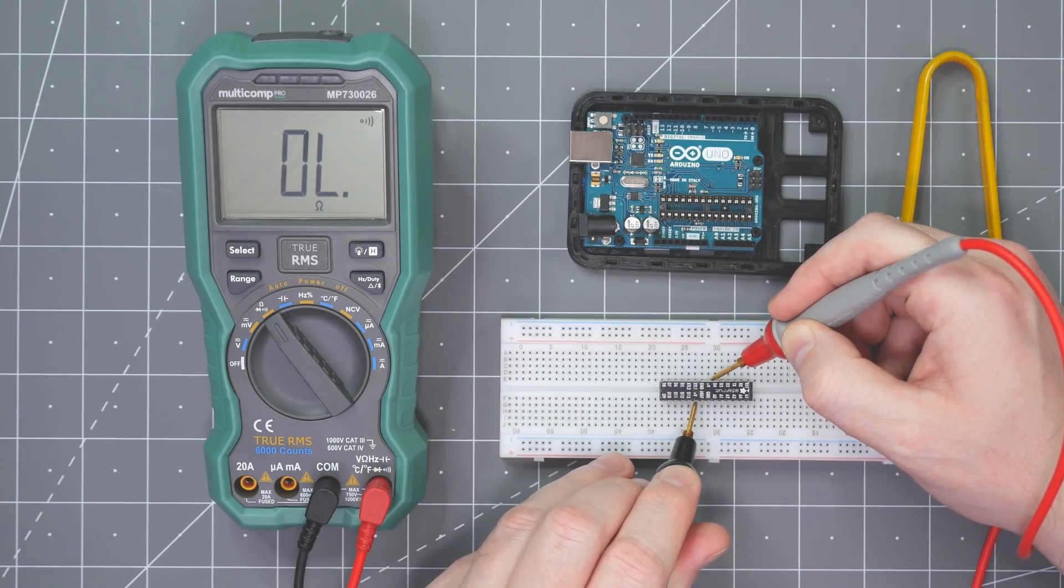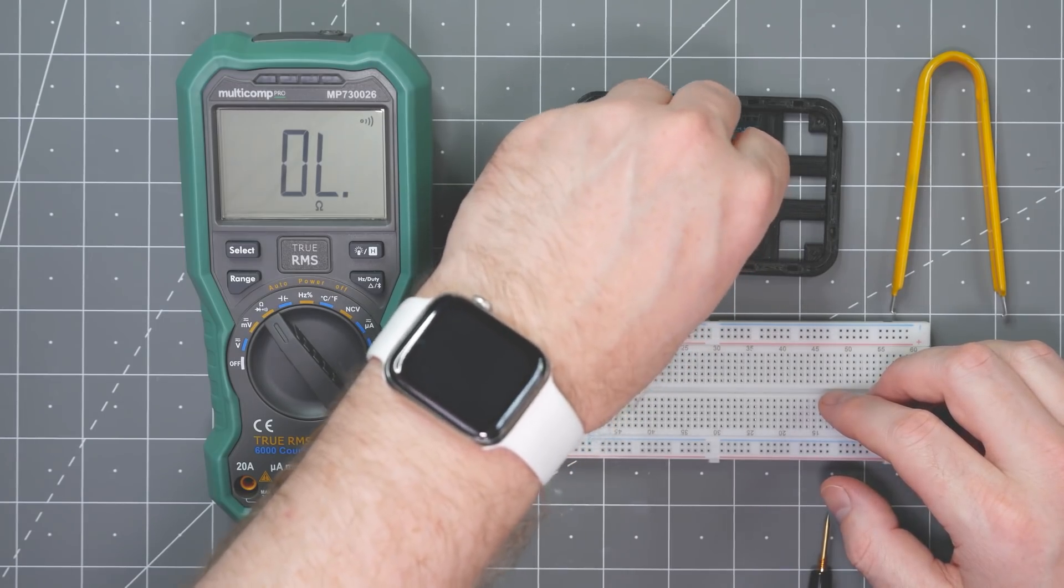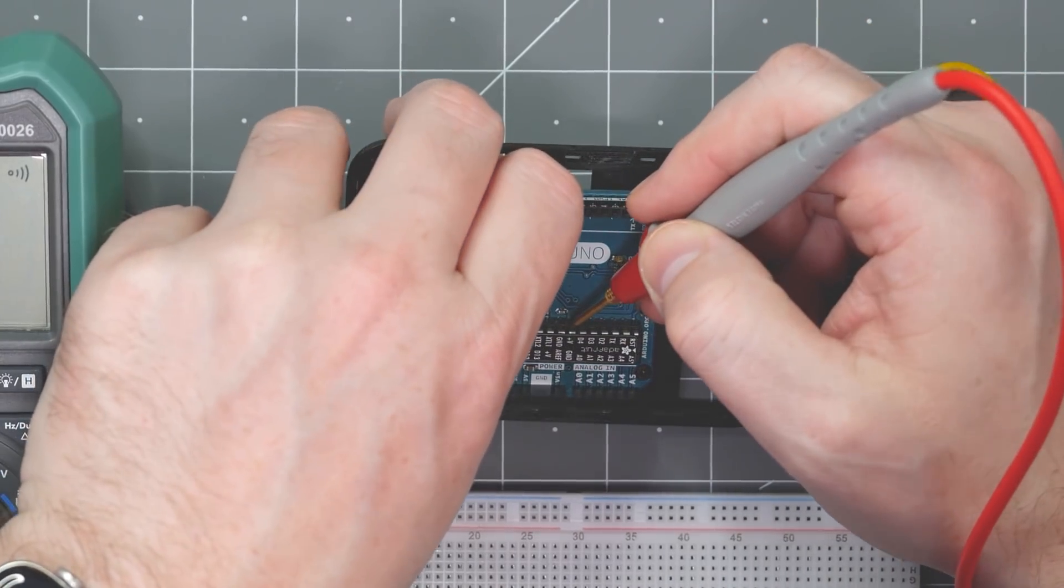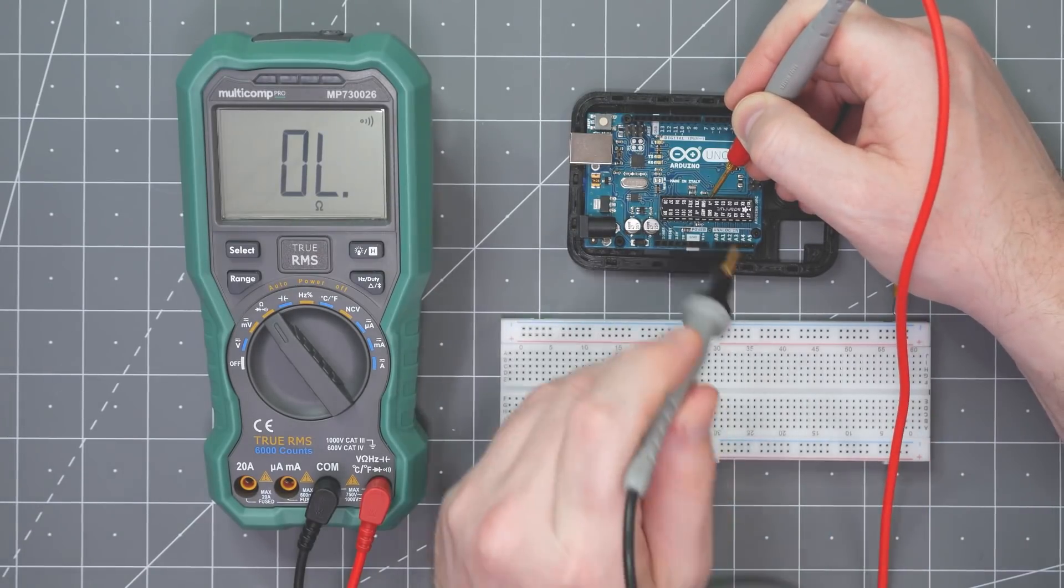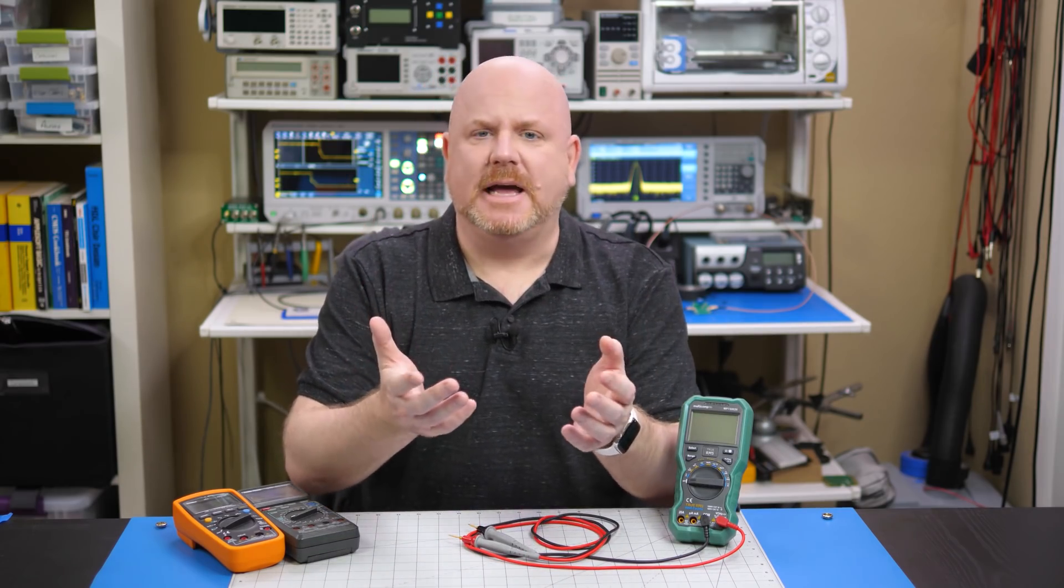For example, on the ATmega328 from the Uno, it has a digital VCC and an analog VCC. The chip by itself shows an open between them. But, when the chip goes into an Arduino board, the pins are now magically shorted together. Well, not magically. Engineerdedly. Anyway, with a populated circuit board, you really have to think about what you are probing.